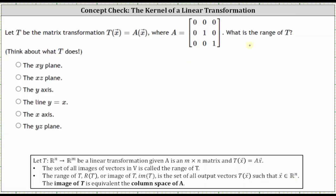We can find the range a couple ways. Let's first find the form of the output vectors by determining T of vector X for any vector X in R^3. We have T of vector X equals matrix A times any vector X in R^3.